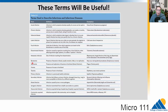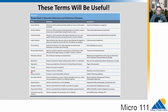Bacteremia is the presence of bacteria in blood. Septicemia is the presence and replication of bacteria in blood. Viremia is the presence of virus in blood. Toxemia is a toxin in the blood. The suffix '-emia' means blood, and different terms describe what is in the blood. When a patient is suffering from septicemia, they need intravenous antibiotics right away.